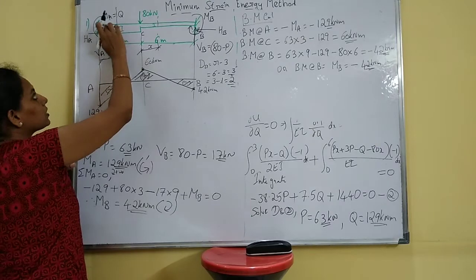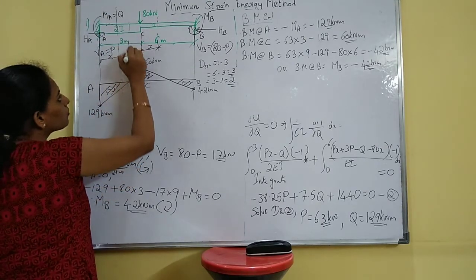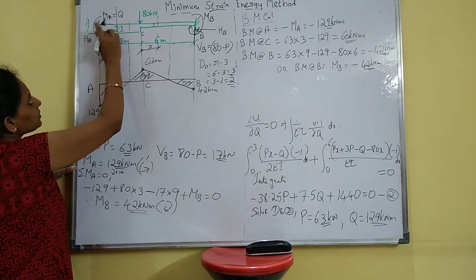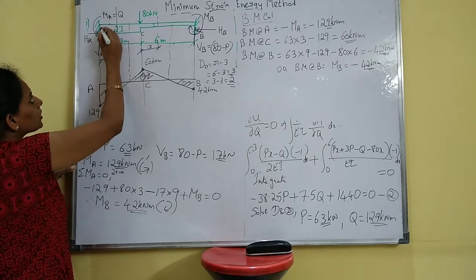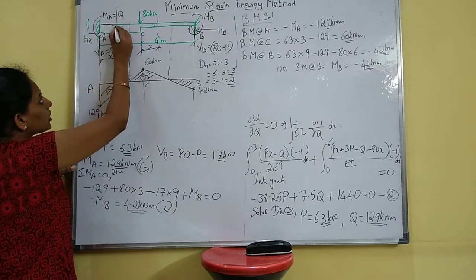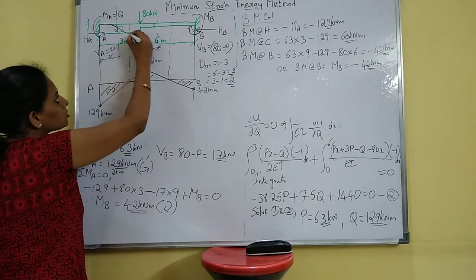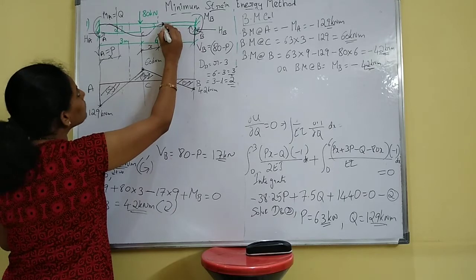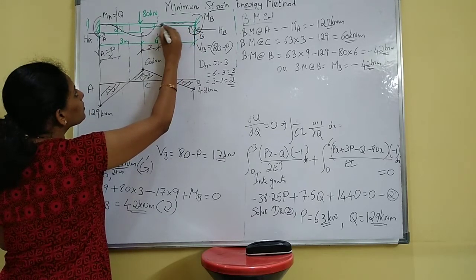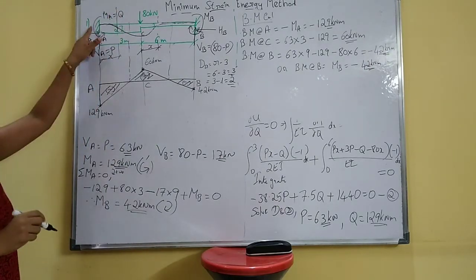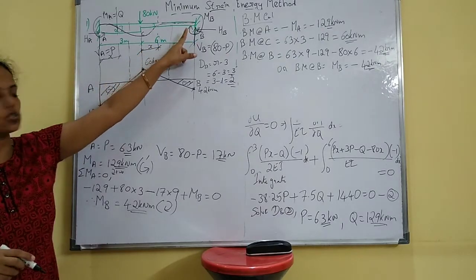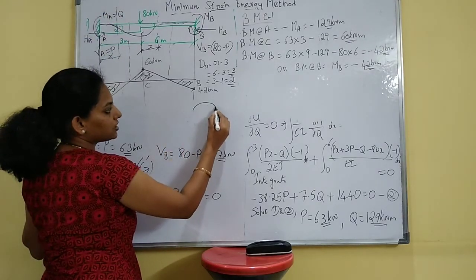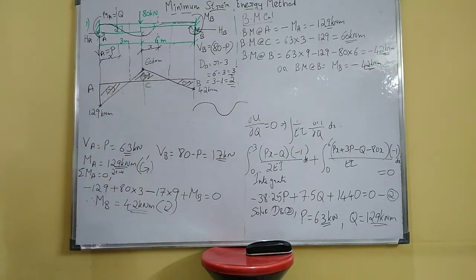To draw the elastic curve: up to point C you have negative (hogging) bending moment, then at C it becomes positive (sagging), and from C to B it goes back to hogging. At A (−129) and B (−42) it is hogging; at C (+60) it is sagging. This is the elastic curve. Thank you.